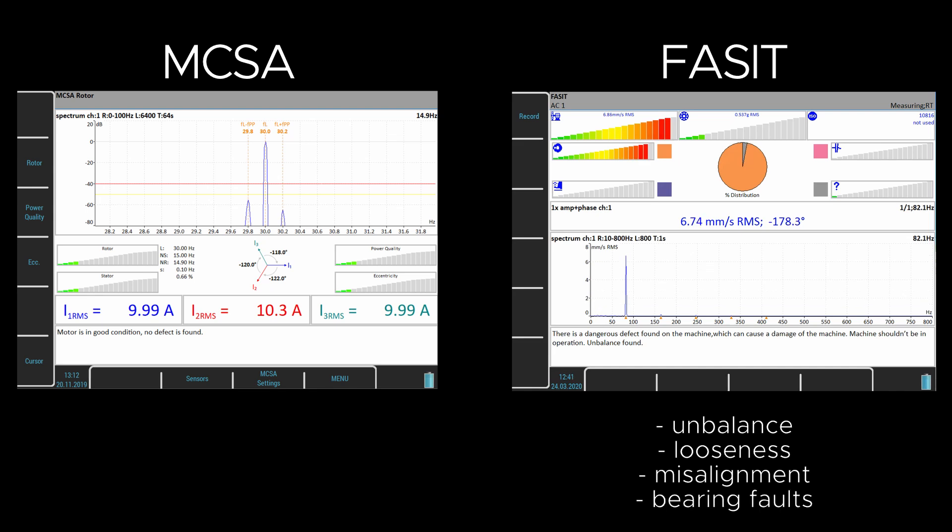The MCSA module of the VA5 Pro device is able to automatically identify rotor and stator faults, eccentricity, broken rotor bars and power quality.